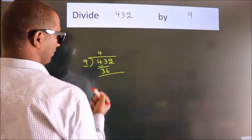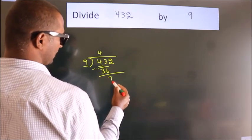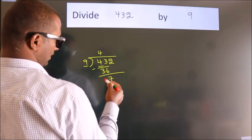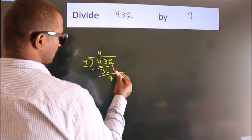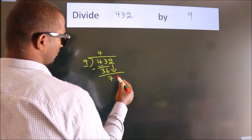Now we should subtract. We get 7. After this, bring down the beside number. So, 2 down.